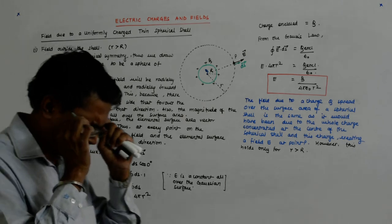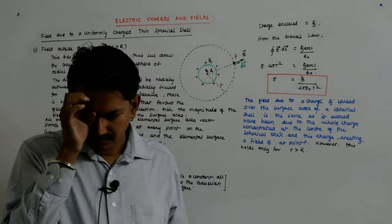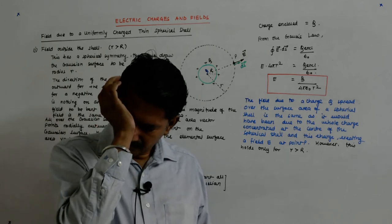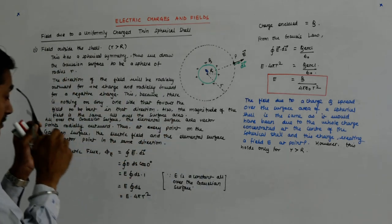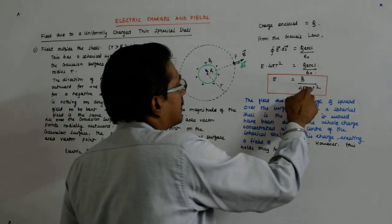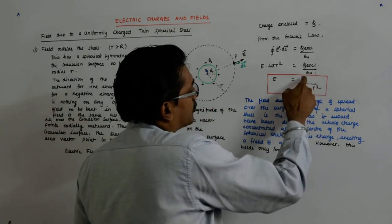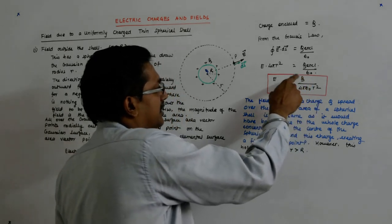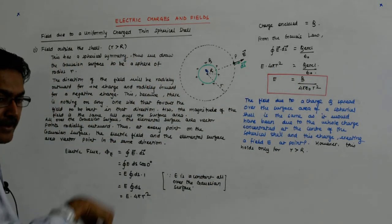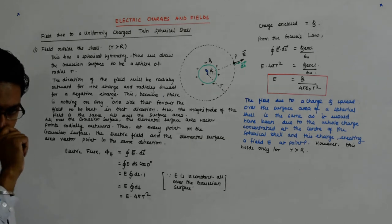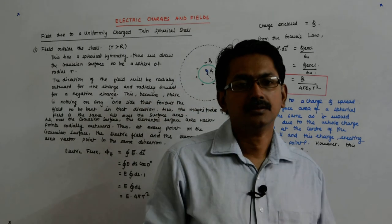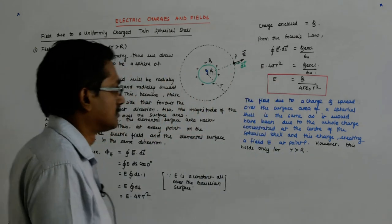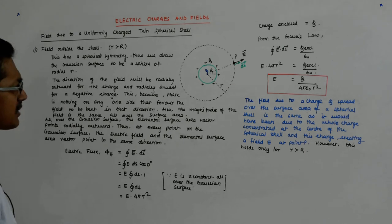What advantage do you get out of that? You can if you want, but it will become more complicated because then you'll have to multiply it by R squared, capital R squared. So Q by 4π R squared becomes sigma, so it becomes sigma upon epsilon naught times capital R squared upon small r squared.